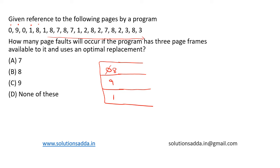Now we have one — one is again a hit. Eight is also a hit. Seven is a miss, so to place it in the page frame we replace among eight, nine, and one. Eight is in the foreseeable future, one is also in the foreseeable future, so nine gets replaced with seven.